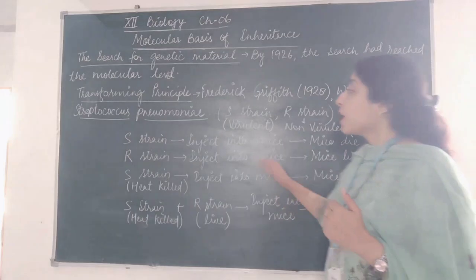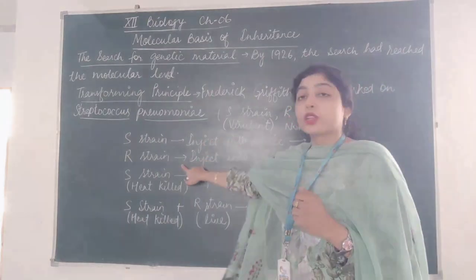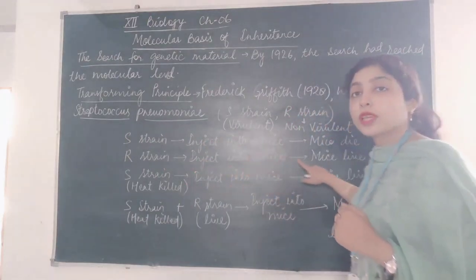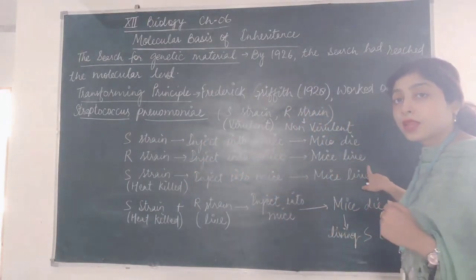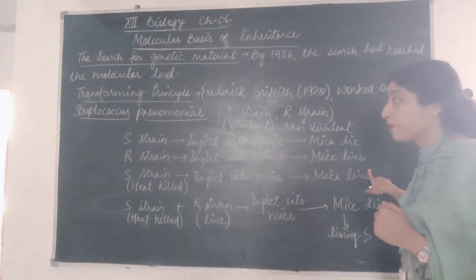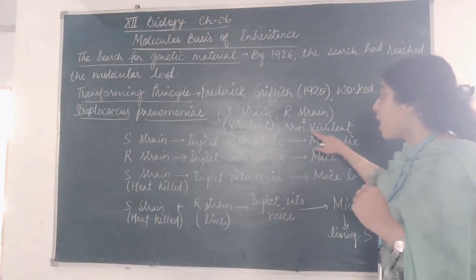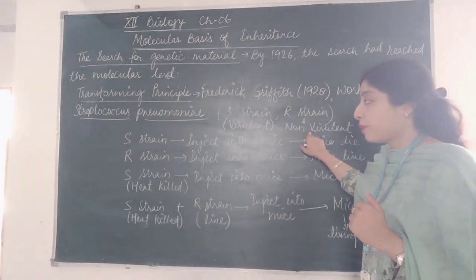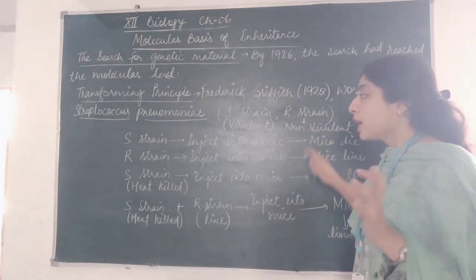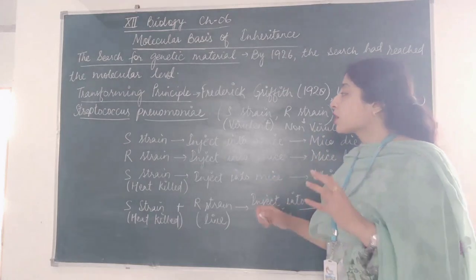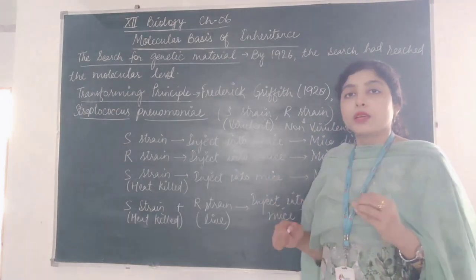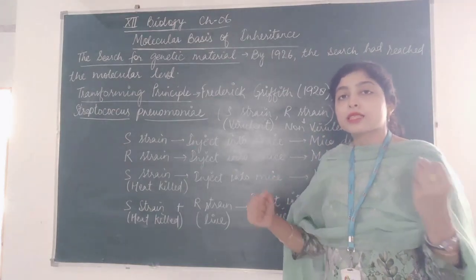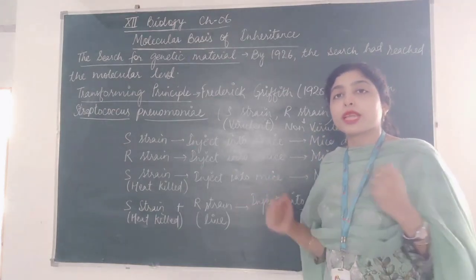When R-strain was injected into mice, the mice did not die, because R-strain is non-virulent. Then Griffith heat-killed the S-strain bacterial cells.